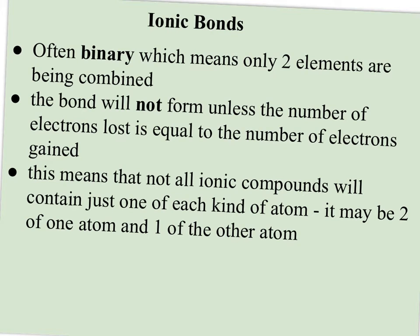Ionic compounds are often binary, which means only two elements are being combined. The bond will not form unless the number of electrons lost by the metal equals the number of electrons gained by the nonmetal. Both atoms have to get stable or reach that magic number of eight. This means that not all ionic compounds contain just one of each kind of atom. It might be two of the metal atom with one of the nonmetal, which is why we see formulas like MgCl2.